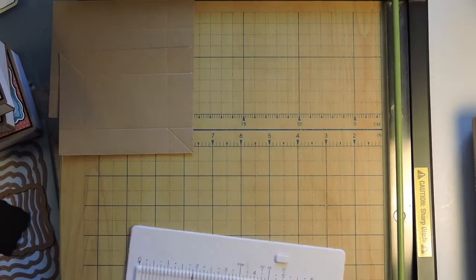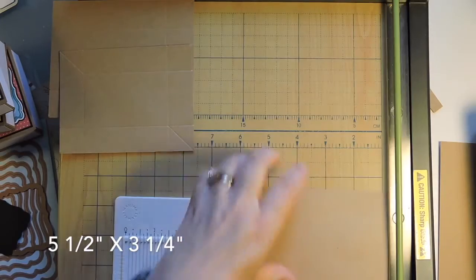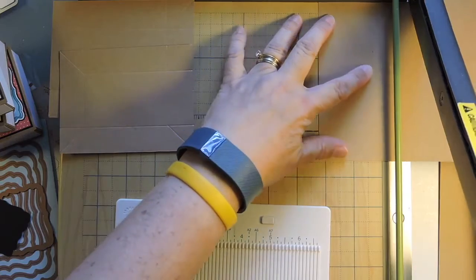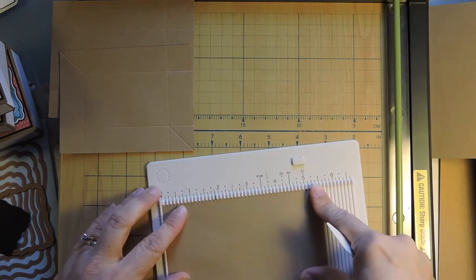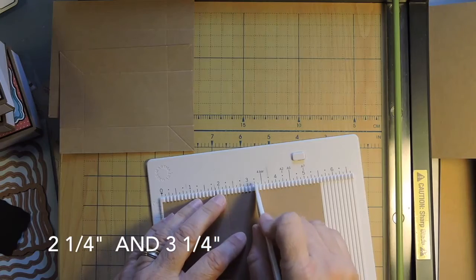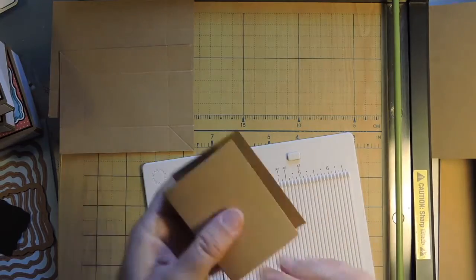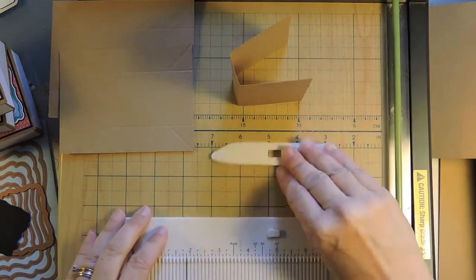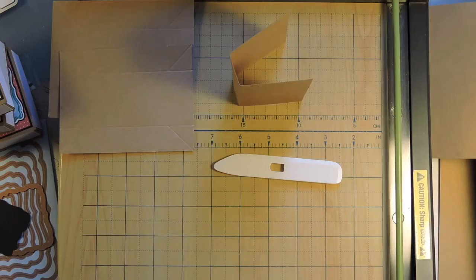Now put that piece aside. Then we're going to do one more piece. We're going to do 5 1/2 by 3 1/4. And this is the cover of your book. And you're going to lay it down going lengthways 5 1/2, and you're going to score at 2 1/4, and 3 1/4. And then you're going to fold this up, and this is the cover of your book, like that. So now keep your little score tool out, but you don't need the board anymore. You can put that aside.